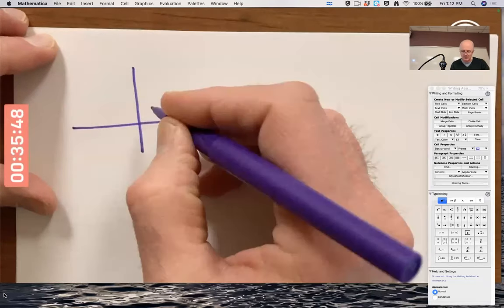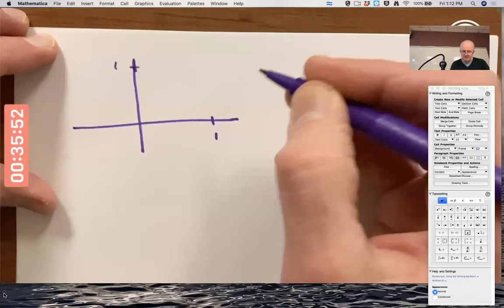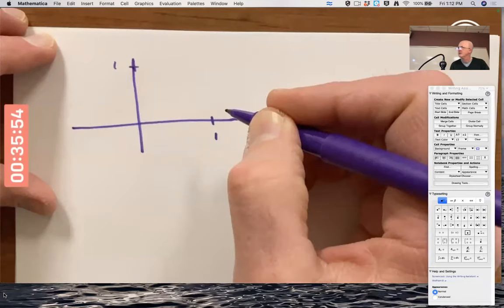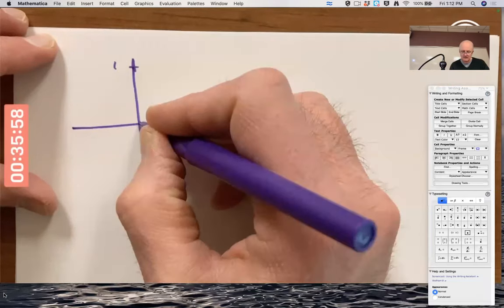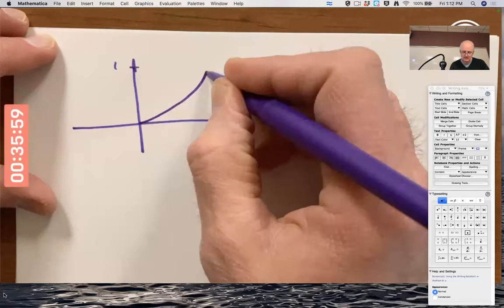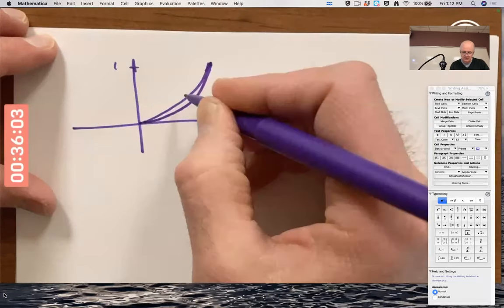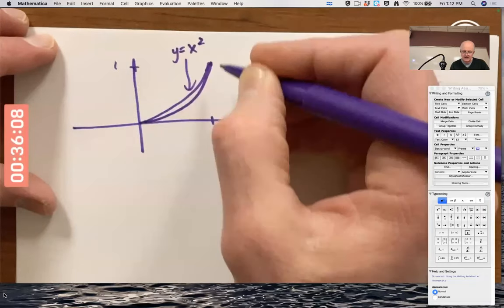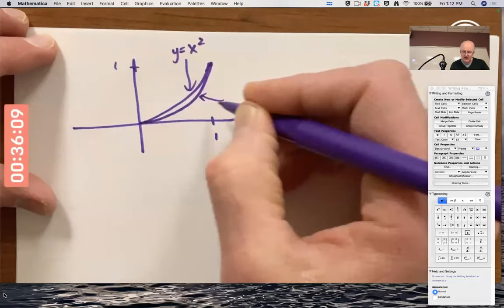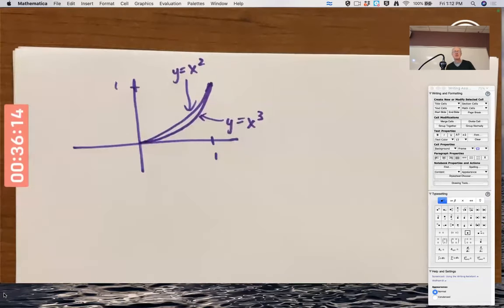The region we're going to revolve will still involve the region between two graphs of two functions of x. The top function here is going to be y equals x squared. The bottom function is going to be y equals x cubed, which may look a little confusing because doesn't x cubed grow faster than x squared?